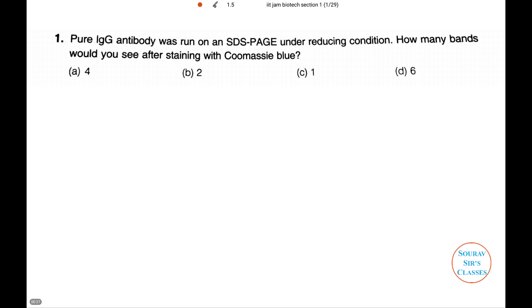Dealing with the first question, we are given that a pure immunoglobulin G antibody was run on an SDS-PAGE under reducing conditions. We need to figure out how many bands we would see after staining with Coomassie blue. We are given four options, only one of them is correct. Let's see what the answer will be.